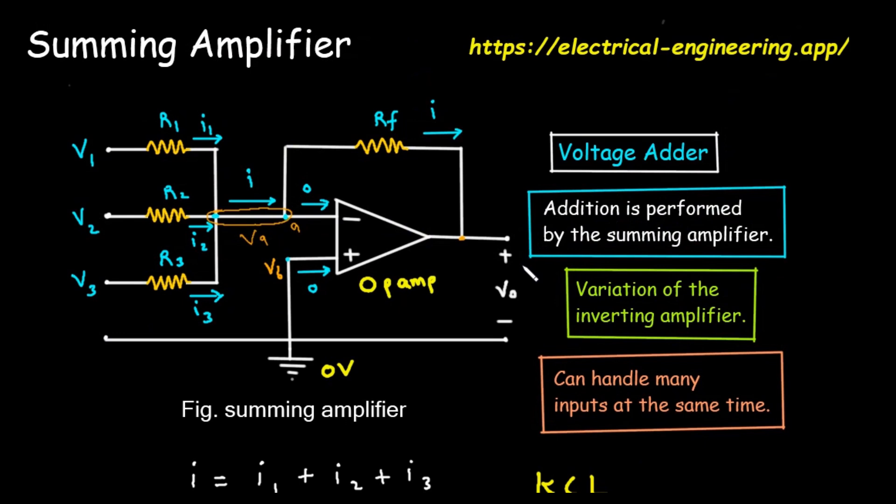By choosing our resistor values, we can precisely control how the inputs are added together, making this one of the most versatile and fundamental building blocks in all of analog electronics.